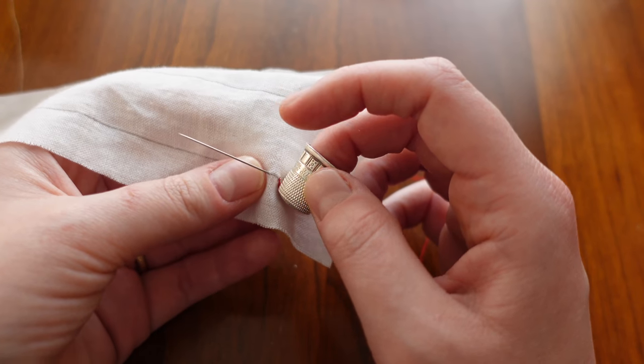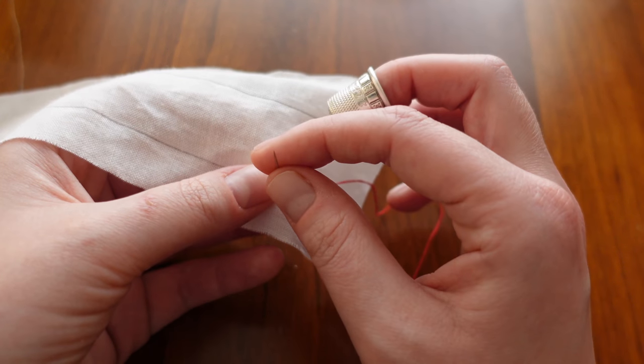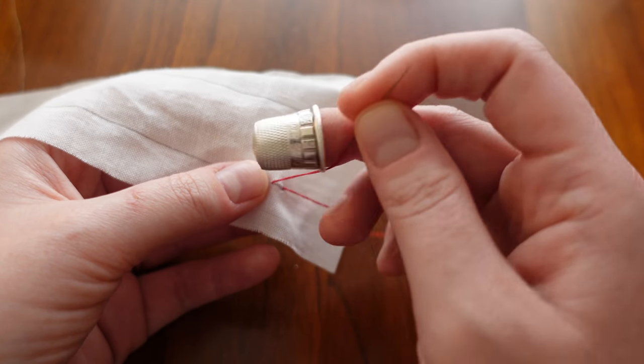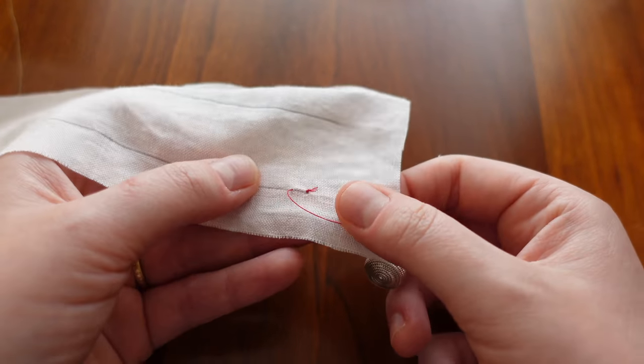The thimble is going to push the needle almost through the fabric and then right before I'm going to pick it up again with my thumb and my forefinger and pull this up and then that knot will now lock into place.